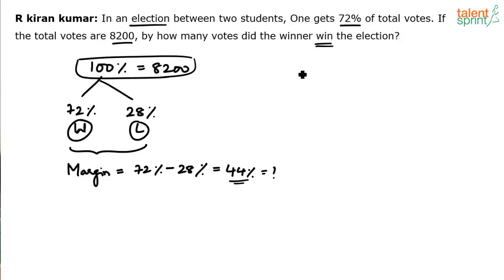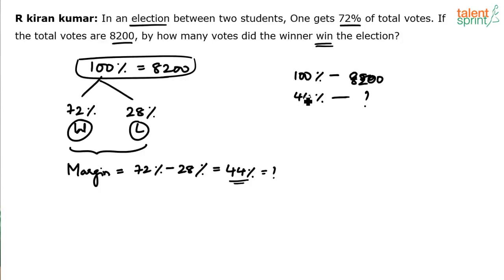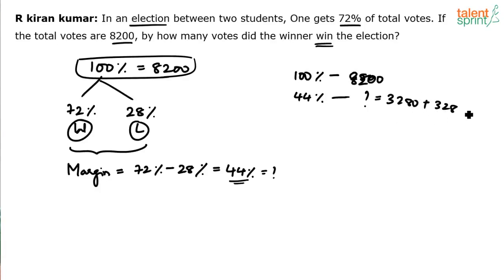Now, do the cross multiplication, or split and merge. 44% can be split as 40% plus 4%. 10% of 8,200 is 820. 40% will be 3,280. 4% will be 328. So the answer is 3,280 plus 328. That gives 3,280 plus 300 is 3,580, plus 28 is — sorry — 3,608.